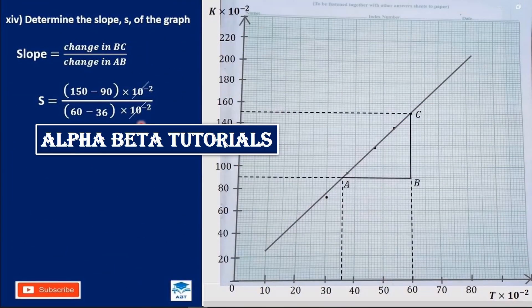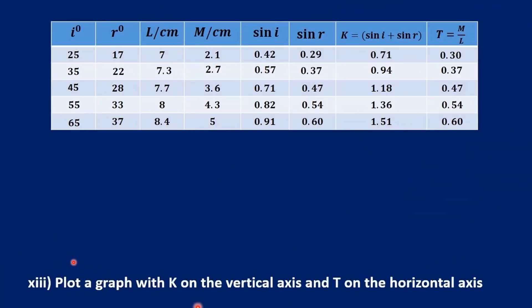Hi everyone, welcome to Alpha Beta Tutorials. In this video, I'm going to explain how to plot a graph in physics practical and find a slope, especially when the values are decimals. Without wasting time, let's go straight to the point. Let's assume we've conducted a physics practical and obtained this data, and we are required to plot a graph following the steps below to make it very simple.